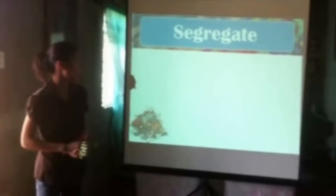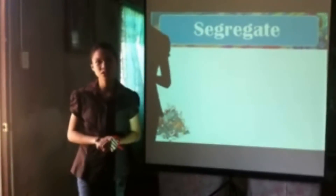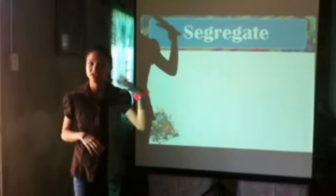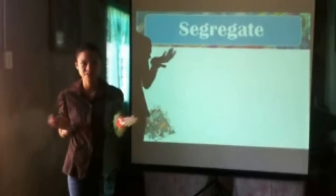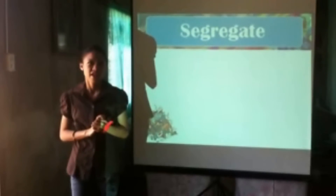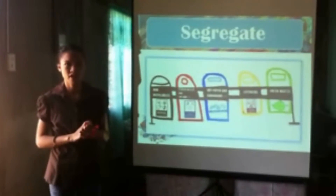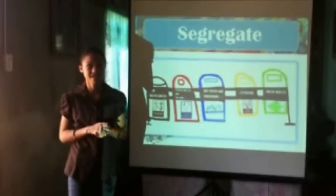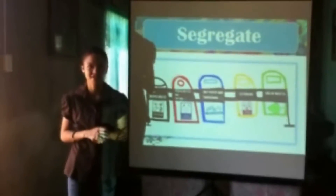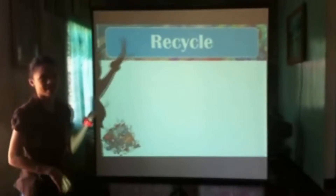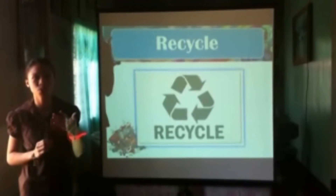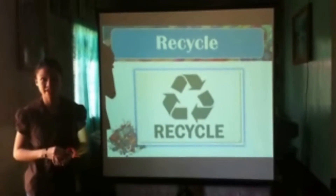The first way is segregation. Segregating is the process of separating trash that is biodegradable and non-biodegradable. We all know that trash is one of the major causes of water pollution. The next way is recycling. Recycling is the process of creating a new product from used materials.